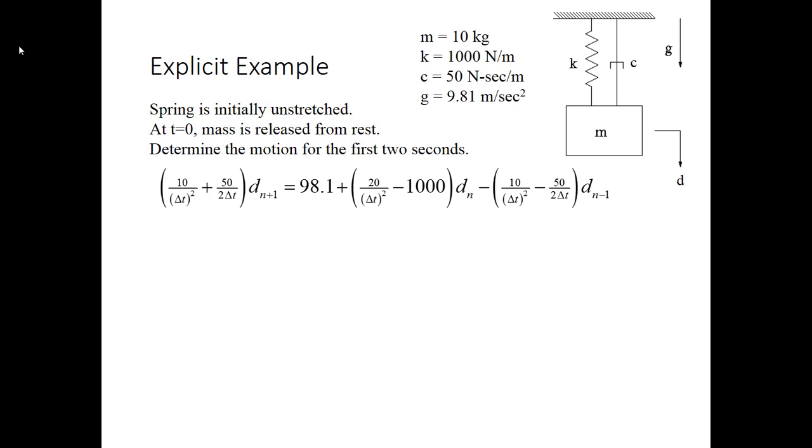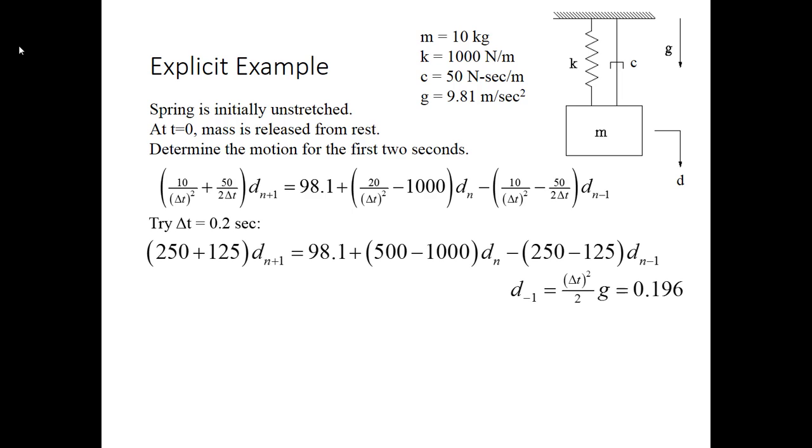So let's apply this recursion formula then. First off, we'll choose a delta t, and just like for implicit, I'm going to start out with 0.2 seconds, and that gives me this recursion formula, and I've also added in my d minus 1 term. Again, that was delta t squared over 2 times the 9.81 meters per second squared, so it's 0.196. So my dn plus 1, when I multiply these terms out, this is my recursion formula. So for every new time step, I simply plug in the d at my current time step and the d at the prior in order to get the d at the next. That's the beauty of this recursion formula.